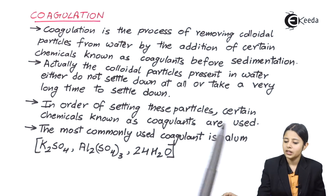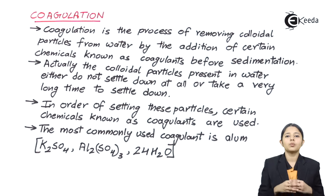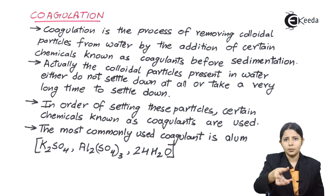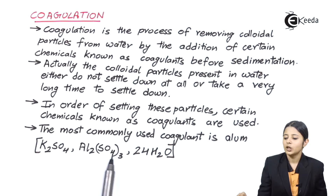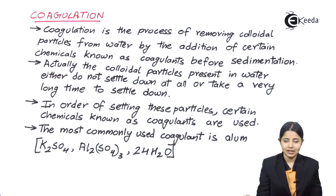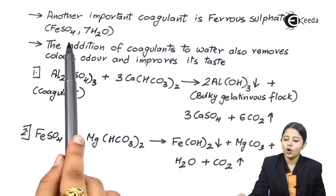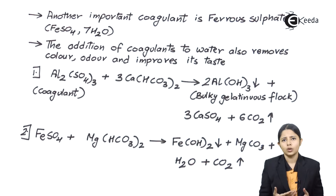To quickly settle these particles, certain chemicals known as coagulants are used. The most commonly used coagulant is alum, which works very quickly — just stirring a lump of alum through water containing colloidal particles will immediately make the water extremely pure. Alum is made up of K2SO4·Al2(SO4)3·24H2O. Another coagulant is ferrous sulfate, FeSO4·7H2O, but alum is more commonly preferred.